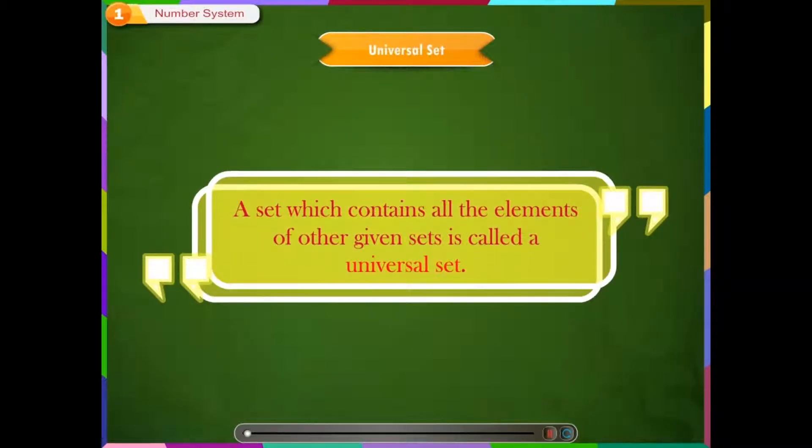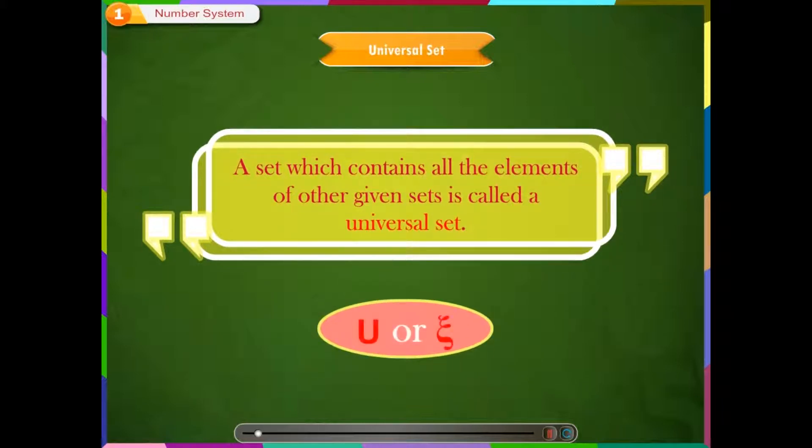Universal set. A set which contains all the elements of other given sets is called a universal set. The symbol for denoting a universal set is capital U.